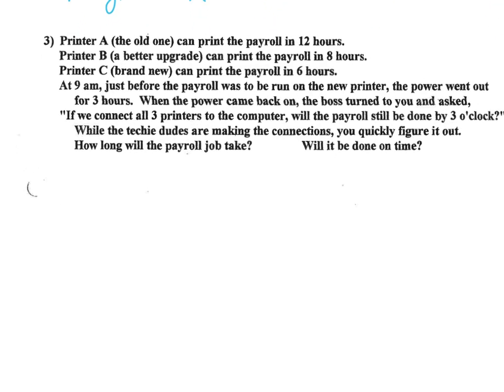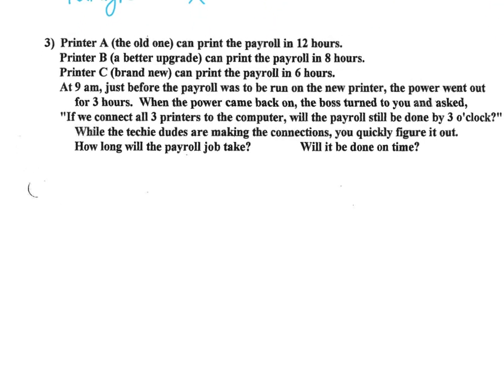Three printers. Printer A, which is the really old one, can print the payroll in 12 hours. Printer B, which is an upgrade, can print it in 8 hours. And printer C, which is brand new, can print the payroll in 6 hours. It says, at 9 a.m., just before the payroll was to run on the new printer, the power went out for 3 hours. When the power came back on, the boss turned to you and asked, if we connect all three printers to the computer, will the payroll still be done by 3 o'clock? While the techie dudes are making the connections, you quickly figure it out. How long will the payroll job take? Will it be done on time?